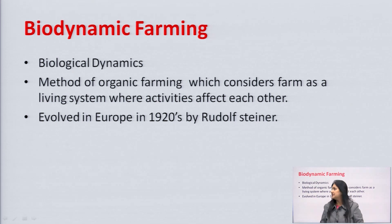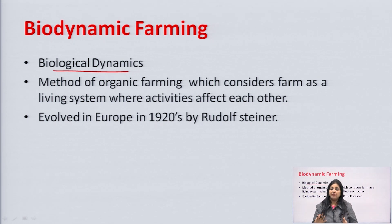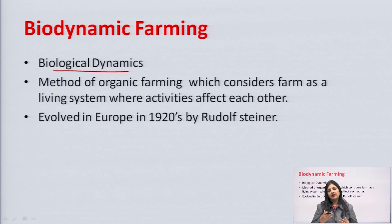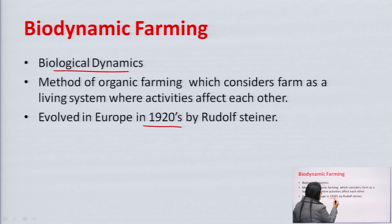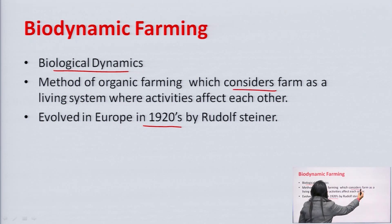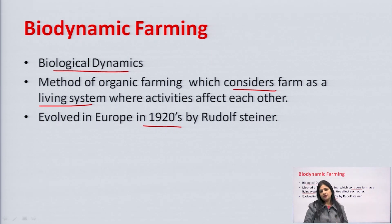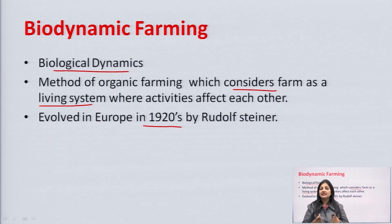Biodynamic agriculture basically means biological dynamics. It means when all the components or parts of agriculture are considered as a biological system — we consider soil as a living system which we nurture in a natural way. This concept of organic farming was introduced in the 1920s by Rudolf Steiner. It is a method of organic farming which considers the farm as a living system where activities affect each other — the activity of the soil affects the growth of insects, the activity of insects affects the fertility of the soil.